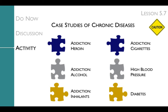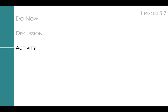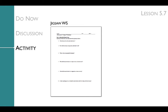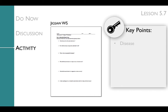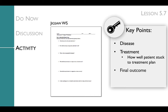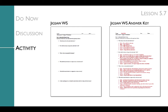Be sure to double-check that the Jigsaw readings are at an appropriate reading level for your students. To help students focus on the most important details of each case, give each student a Jigsaw worksheet that has them take notes on the key points: the disease, the treatment, how well the patient stuck to the treatment plan, and the final outcome. You can review all of this information in the Jigsaw worksheet answer key. The teacher primer and teacher manual also go over all of the key scientific concepts included in the Jigsaw.